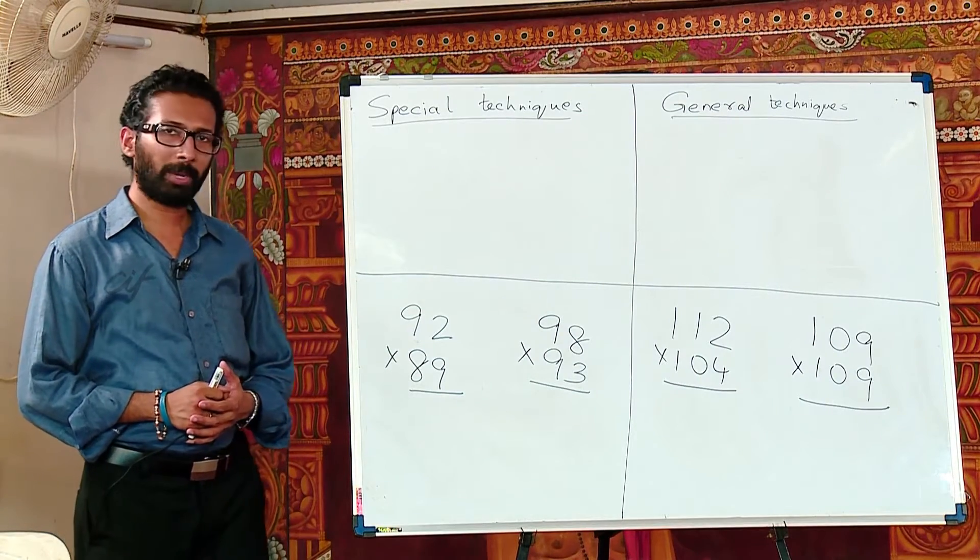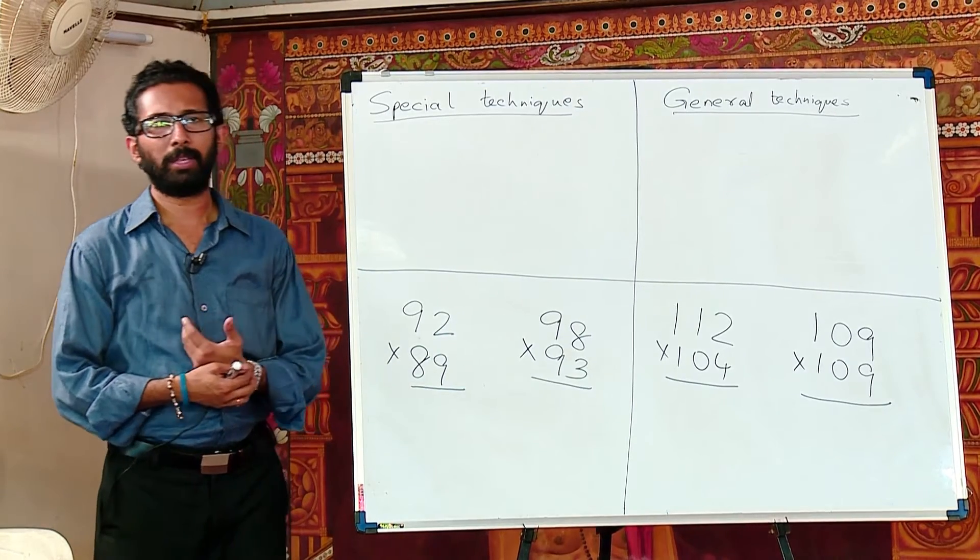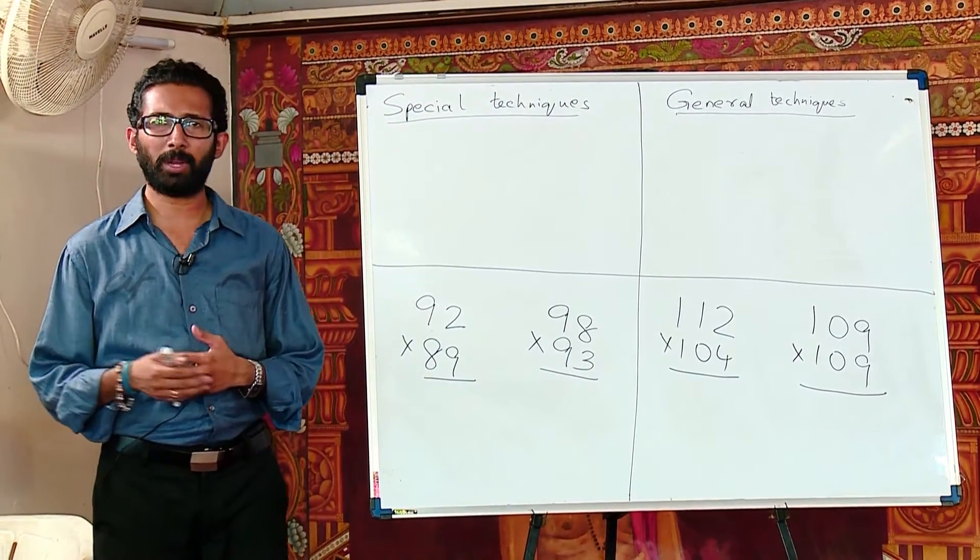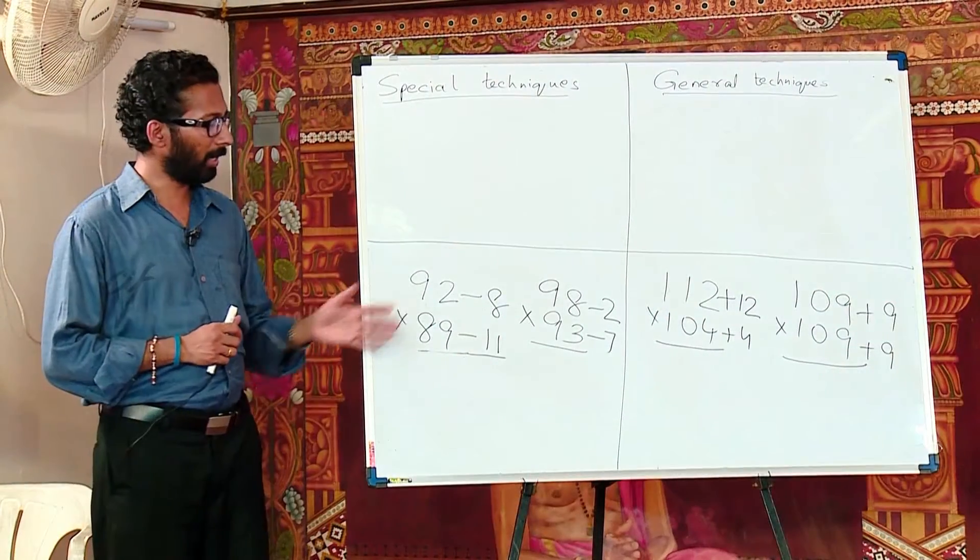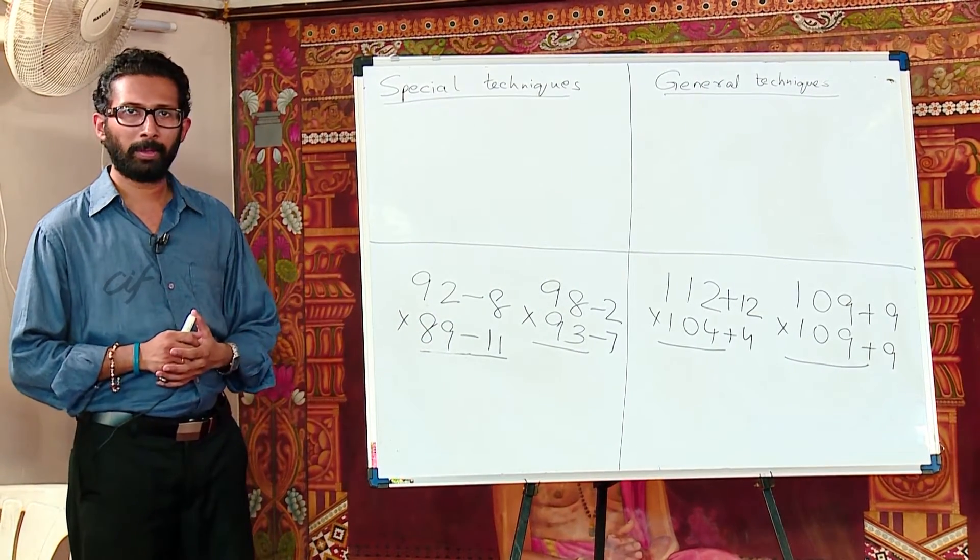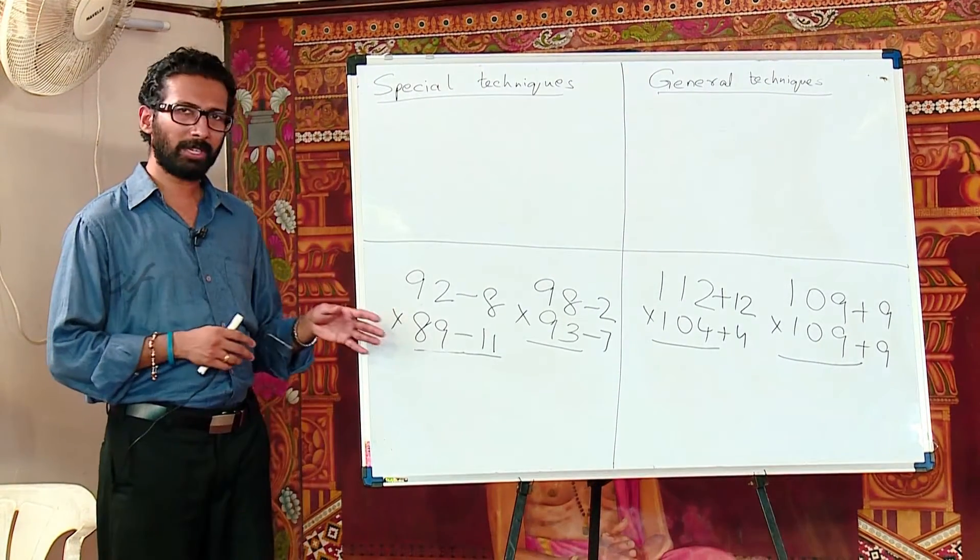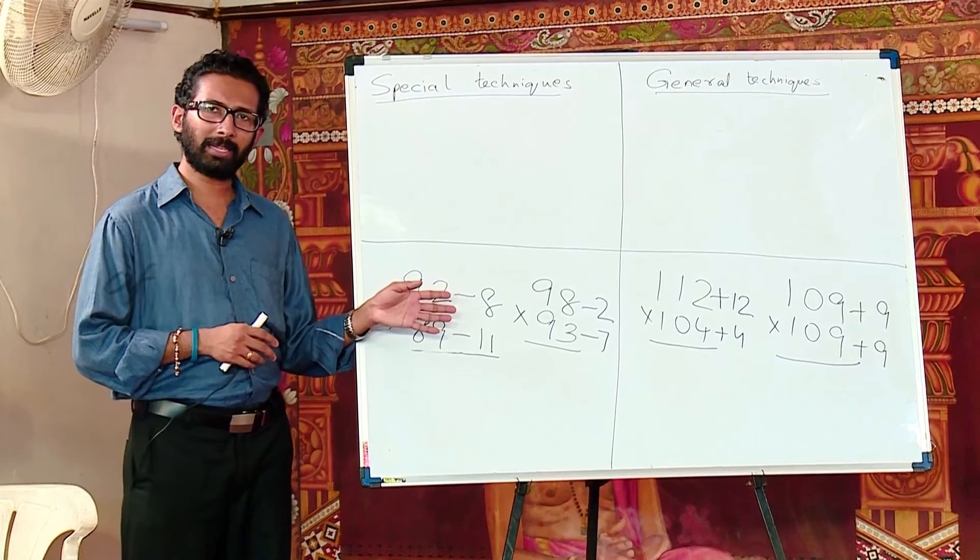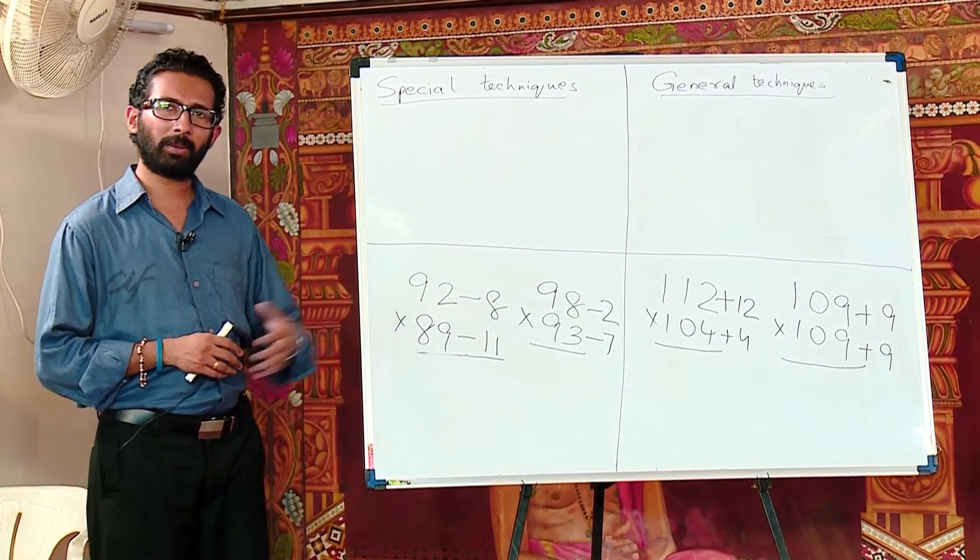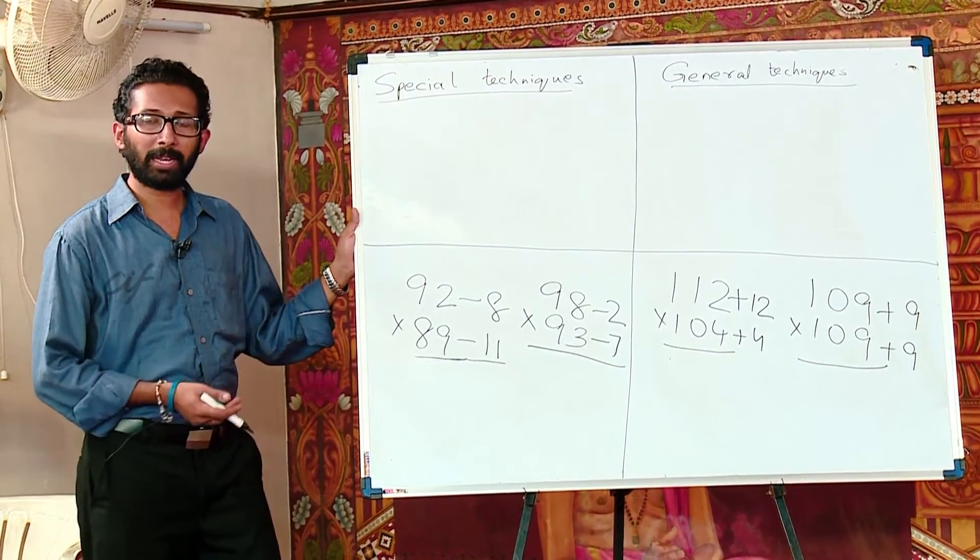So here we have 4 multiplication problems. As you can see, all the numbers are near to 100. So 100 is nothing but a power of 10. So this technique can be used for numbers which are very close to a power of 10. So here I have written a few numbers 8, 11, 2, 7, 12, 4, 9 and 9. So maybe you can just make a guess why I have chosen these numbers. As you can see, 92 is 8 less than 100. 89 is 11 less than 100. So it applies for all the calculations.